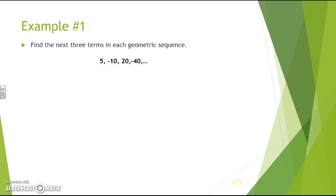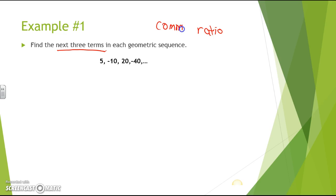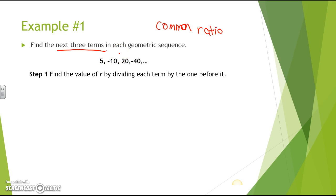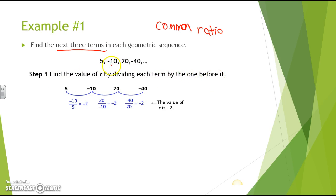Here's an example: find the next three terms in the geometric sequence 5, negative 10, 20, and negative 40. To find the common ratio r, divide each term by the one before it: negative 10 divided by 5, 20 divided by negative 10, and negative 40 divided by 20, all giving negative 2. So our common ratio r is negative 2.